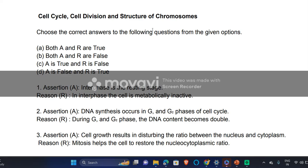Hello students. In this video we are going to discuss the assertion and reasoning questions of the next chapter — cell cycle and cell division, and structure of chromosome. The criteria is: option A if both statements are true, B if both statements are false, C if A is true and R is false, and D if A is false and R is true. I will just discuss whether each statement is true or false to save time.